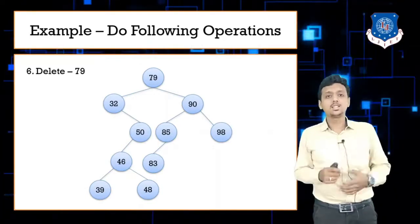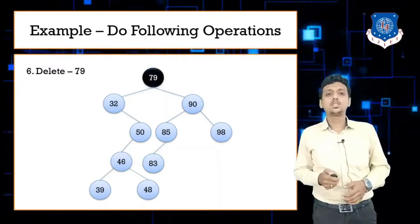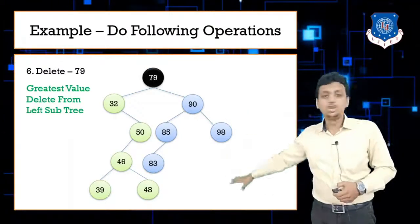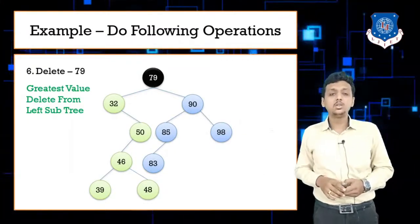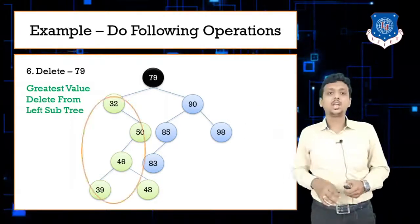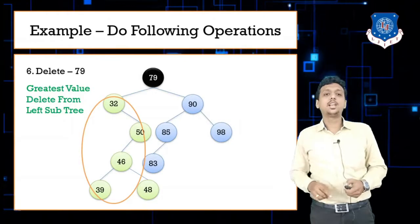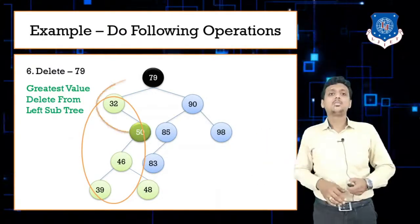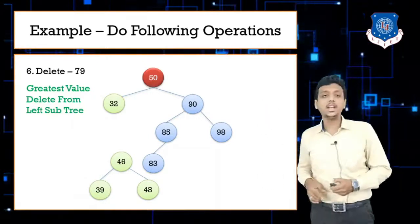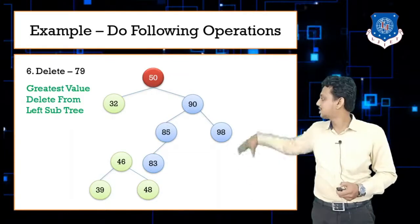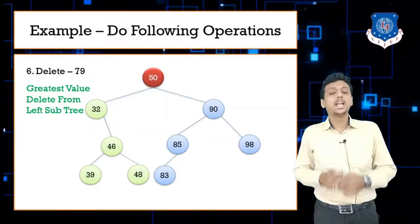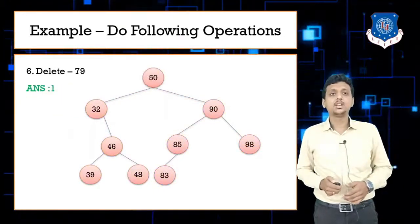Answer 1: Take the greatest value from the left subtree. The highlighted green nodes are the left subtree. The greatest value is 50. So 50 takes the place of 79 — 50 is removed from its original position and placed at the root. The remaining node 46 fills the space left by 50. This is the answer after deleting 79 using the greatest value from the left subtree.